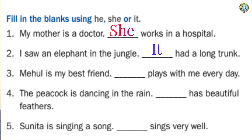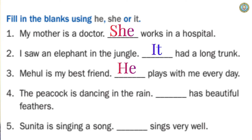Number three: 'Mihul is my best friend.' Mihul is a boy's name. So instead of boy, we use the word 'he.' The answer is: 'He plays with me every day.' In the blank, you write 'he.'